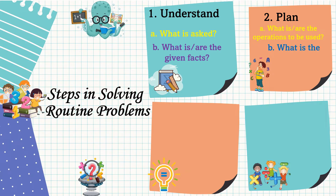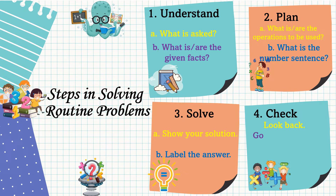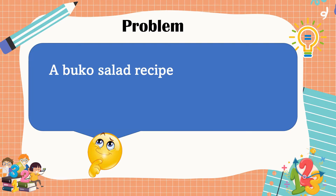The third step is to carry out the plan — solve the problem, show your solution, and label the final answer. Lastly, check or look back — go back and check the flow of your computation. This is our first problem: a buko salad recipe uses three and one-fourth cups of milk.